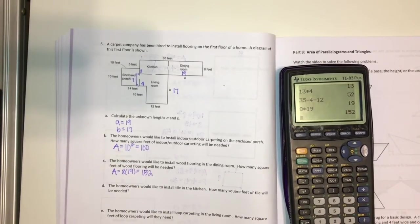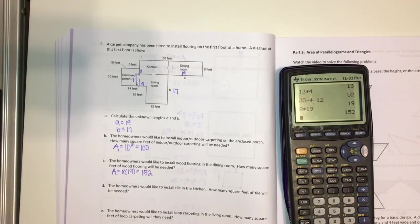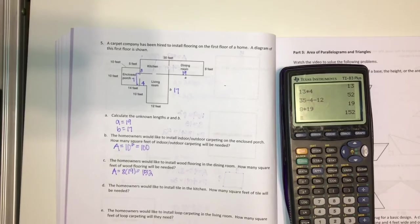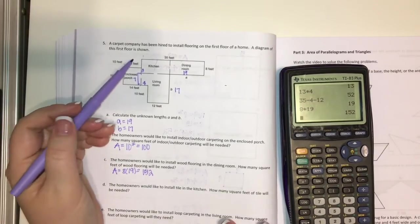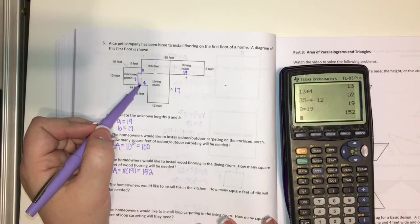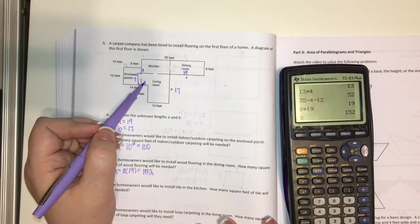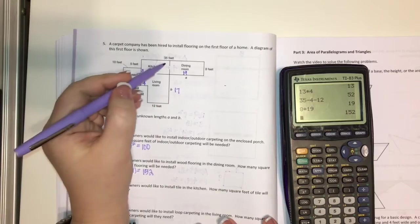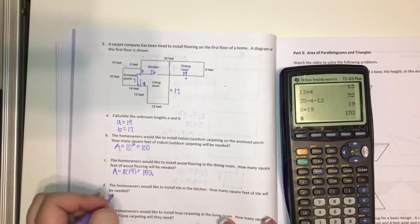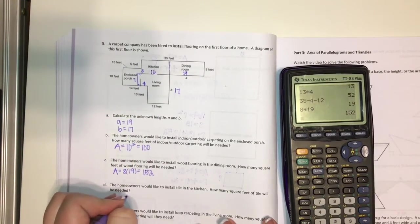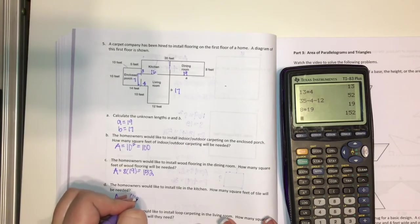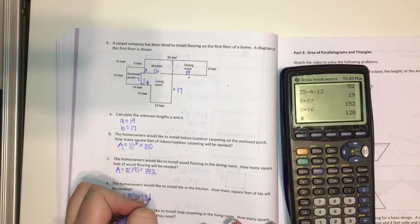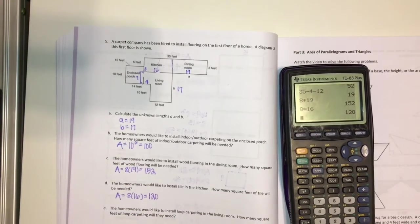The homeowners would like to install tile in the kitchen. How many square feet of tile would be needed? So again, in the kitchen, I would need to find out the area. It looks like we've got 12 plus 4. So it looks like this part is 16. And this is still going to be 8. So the area is going to be 8 times 16 for the kitchen, which gives us 120 square feet.